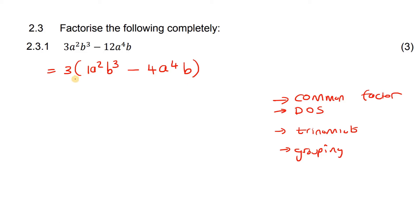To make sure that we've done it correctly, if we had to multiply this back, don't do it actually, because then you're just going to go back to this. But if you just want to double check yourself in your test, if you multiply these together, you should get 3a²b³, and then if you multiply this back over here, you should get negative 12a⁴b. So everything's good there.